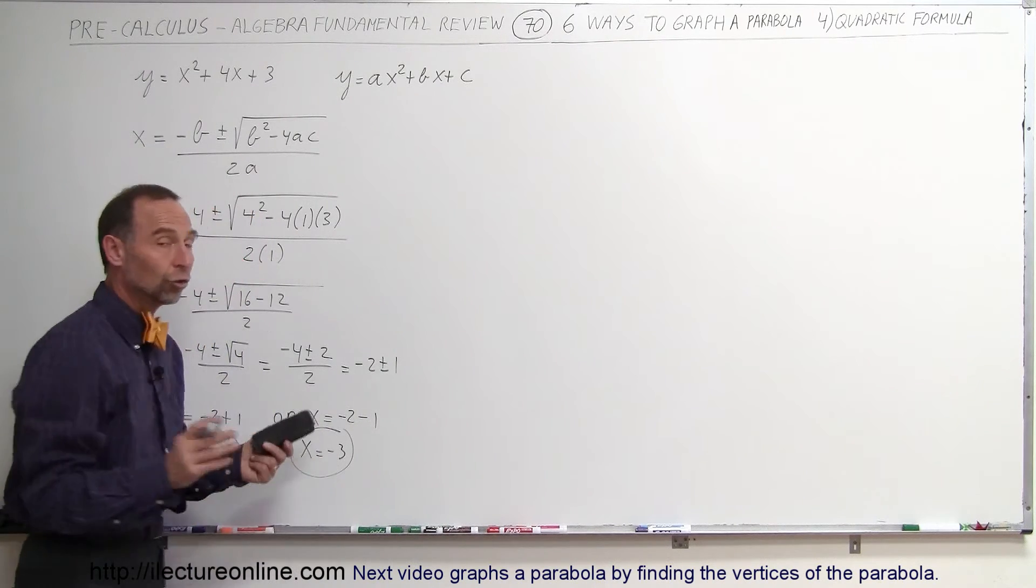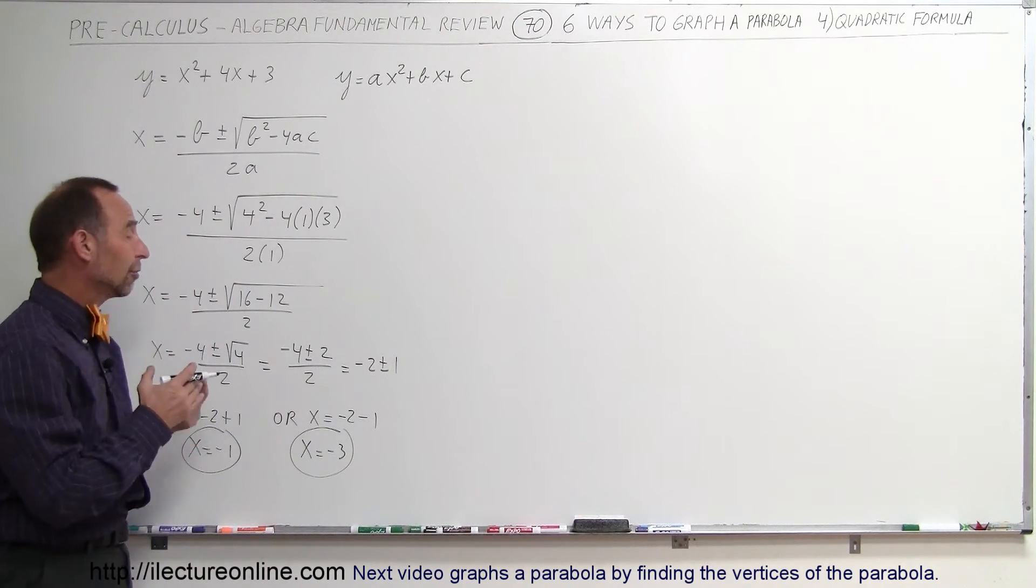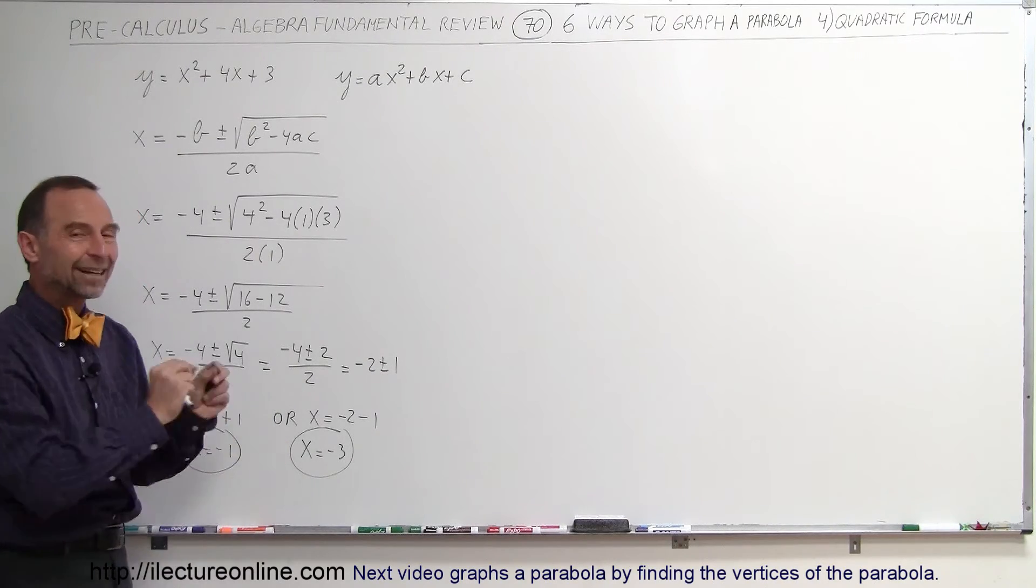Now what does that mean? The two solutions of the quadratic equation, well, those are the places where the quadratic, where the graph crosses the x-axis. Those are the points where the x-axis is crossed.